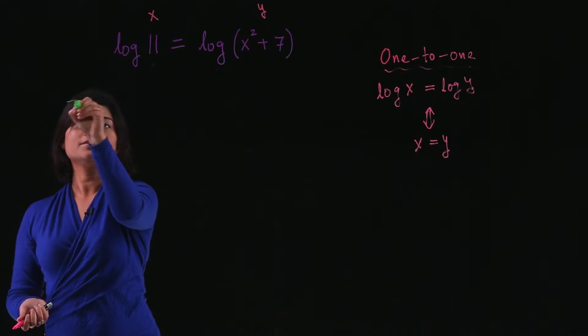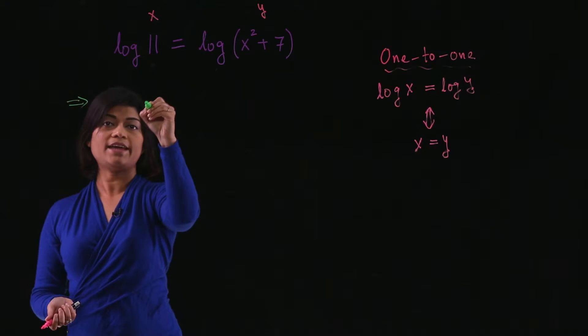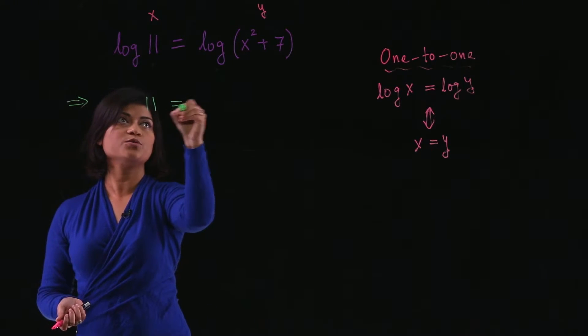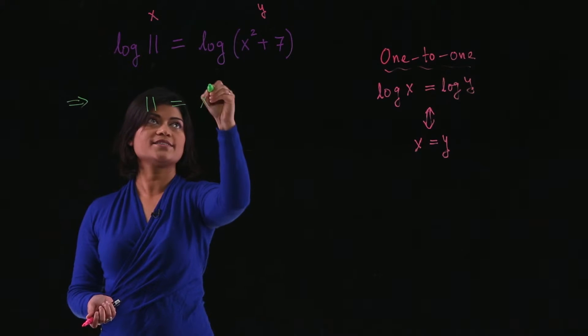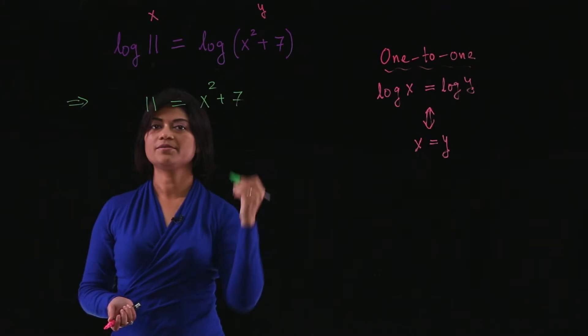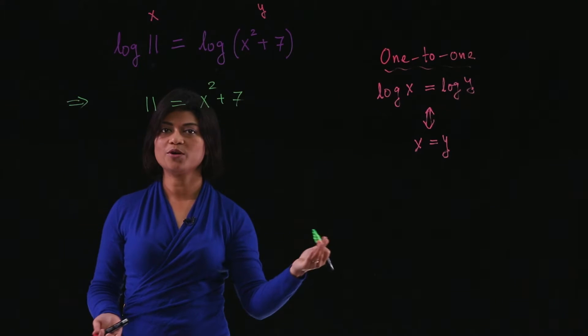This implies that x, which is 11, should be equal to y, which is x squared plus 7. This is where we use the one-to-one property.